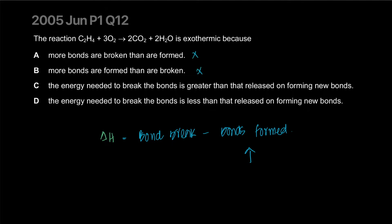So that's not about more or less. The energy needed to break the bonds. Okay, there we go. Is greater? No. The energy needed to break the bonds is less than the released on forming new ones. So more needs to be released for it to be exothermic. So D is our correct answer.